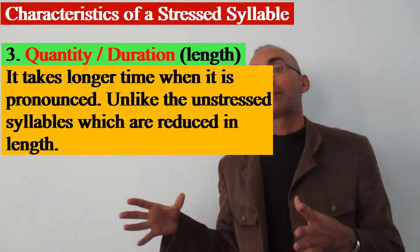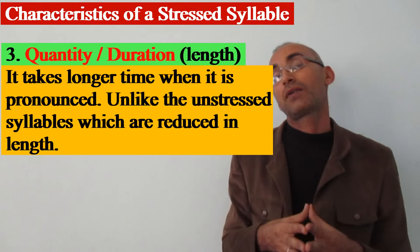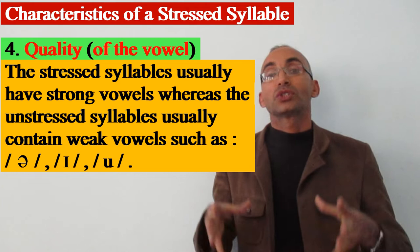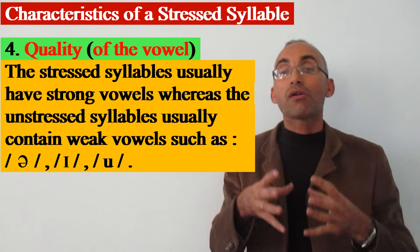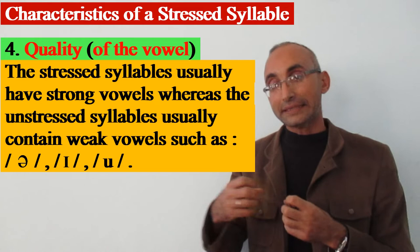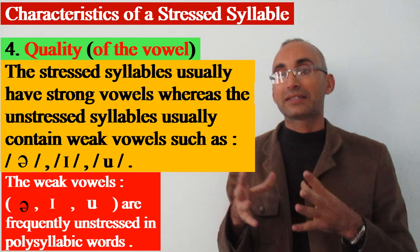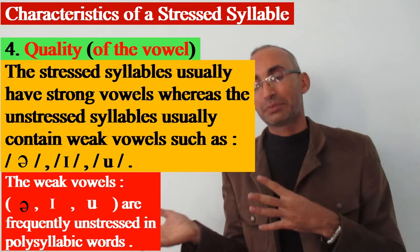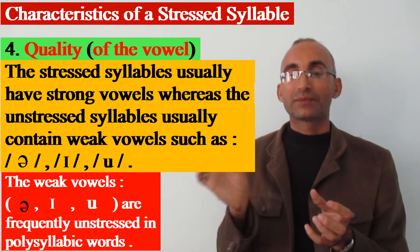The fourth factor or characteristic of the stressed syllable is quality — mainly of the vowel. Stressed syllables usually contain strong vowels, like 'a,' 'o,' and the other long vowels such as 'u,' 'o,' 'i,' and so on. But the weak vowels — like schwa, short 'i,' and short 'u' — are frequently unstressed in polysyllabic words. The syllables containing these weak vowels are usually given unstressed positions.